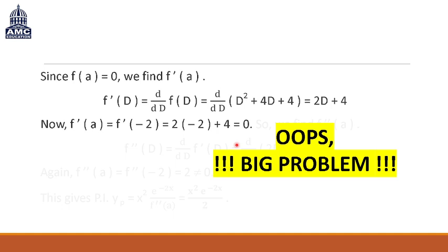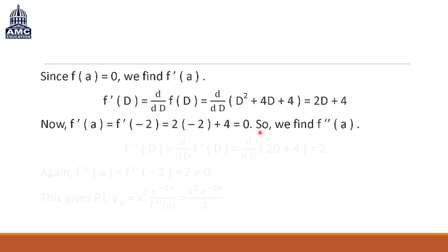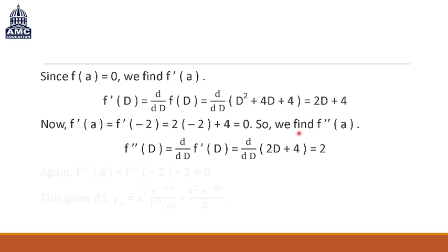Big problem — f(a) = 0 and f′(a) = 0. So we find the second order derivative f″(D). f″(D) is the first order derivative of f′(D). Since f′(D) = 2D + 4, differentiating gives f″(D) = 2, because the derivative of 2D is 2 and the constant 4 vanishes. Now f″(a) at a = −2: since f″(D) = 2 everywhere, f″(a) = 2, which is not equal to zero.